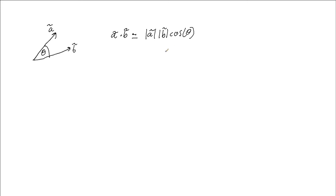What I want to look at further is what if we have our vectors in component form. This definition works well if we have our vectors in polar form, because then we know the angle to A and the angle to B, and the angle between them is just the difference. But if we have it in component form, life may or may not be a bit harder. So let's see if we can work out what the dot product would be in component form.